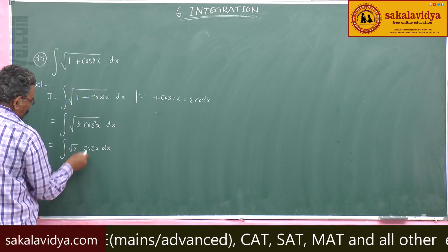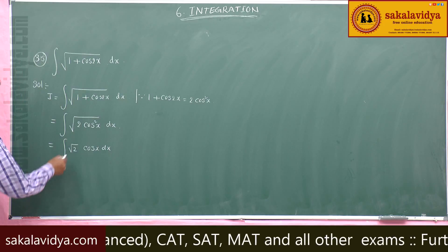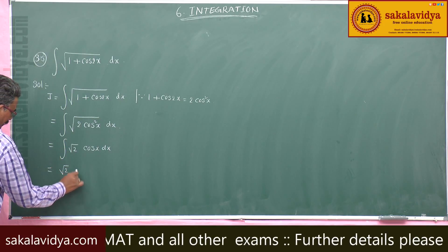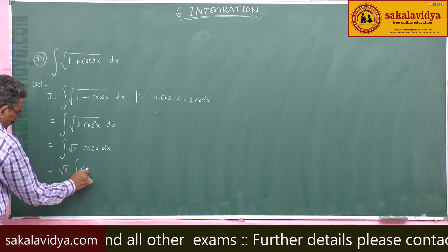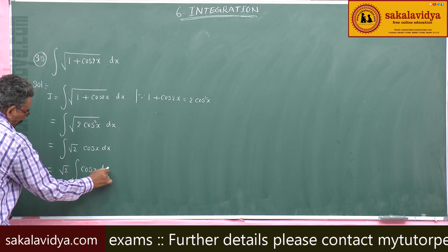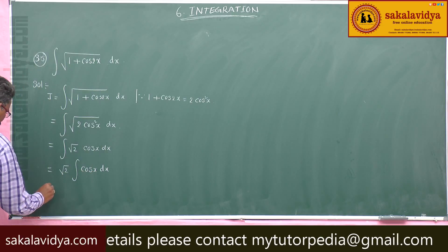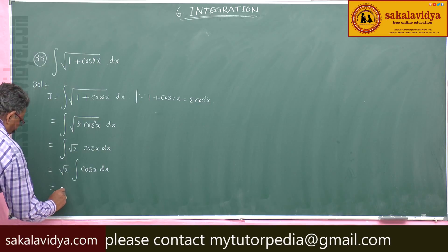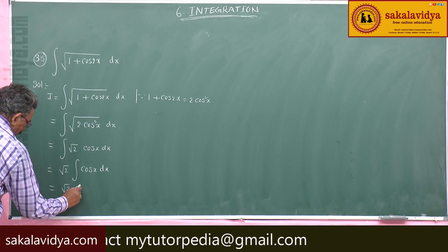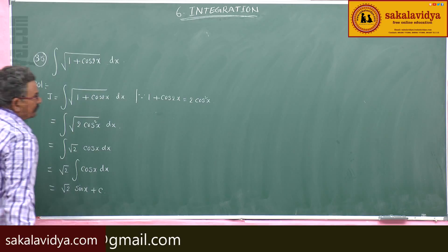Root 2 is taken out from the integral symbol, giving root 2 times the integral of cos x dx. The integral of cos x is sin x, so the result is root 2 sin x plus a constant of integration.